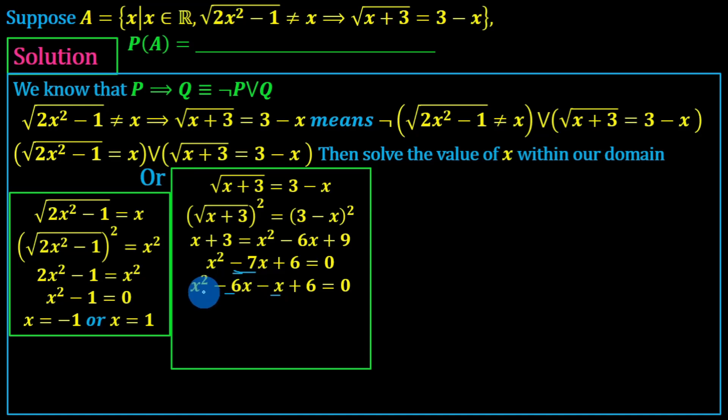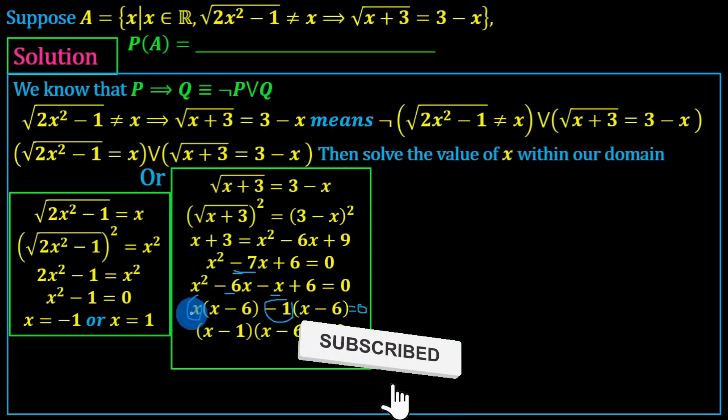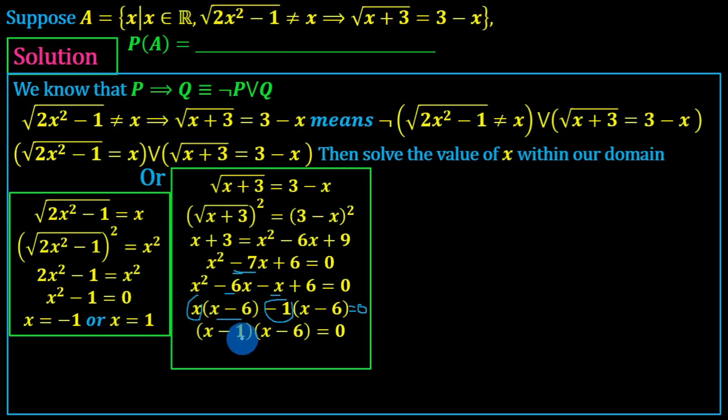Using the formula minus b plus or minus square root of b squared minus 4ac divided by 2a. This is the value of x. x minus 6 is equal to 0, or x minus 1 is equal to 0. This is the value of x is equal to 1 and x is equal to 6.